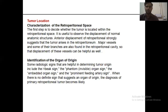Tumor location: the first step is to decide whether the tumor is located within the retroperitoneal space. It is useful to observe the displacement of normal anatomical structures. Anterior displacement of retroperitoneal organs strongly suggests that the tumor arises in the retroperitoneum. Major vessels and some of their branches are also found in the retroperitoneal cavity, so displacement of these vessels can be helpful.